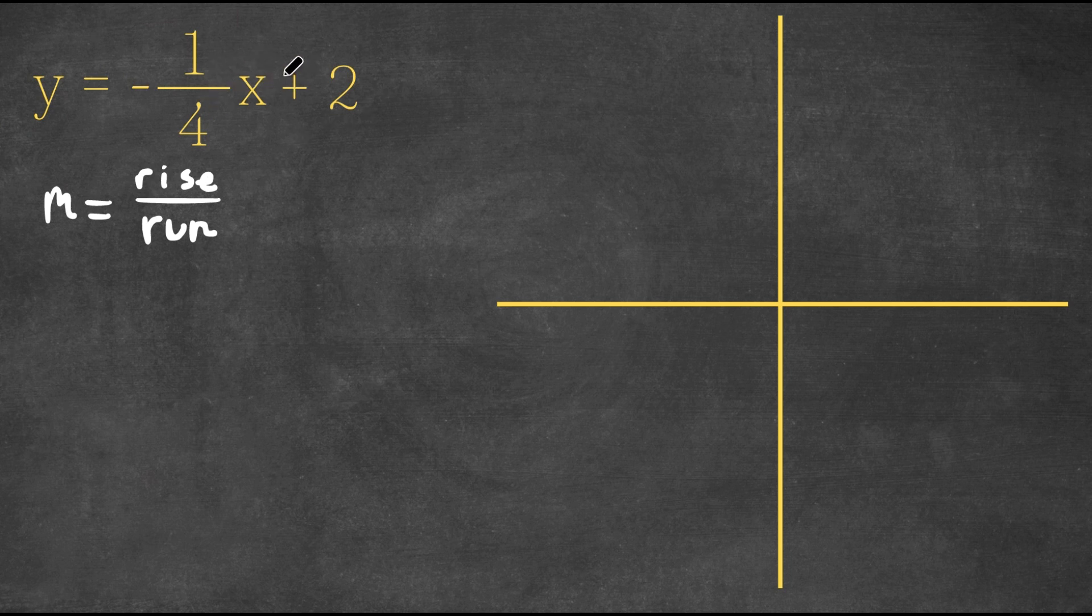So let's start with graphing this equation. We always start at our y-intercept, which in this case is two. So I'm going to go two units up, and this is where we always start. So I'm going to put a little point here.